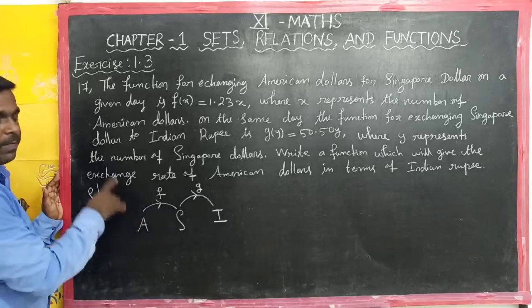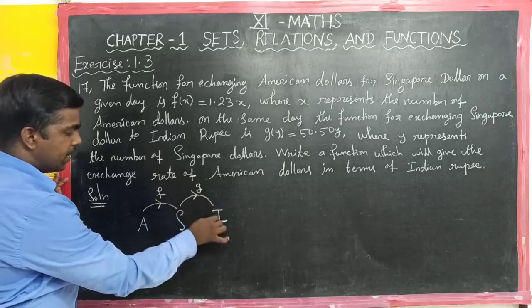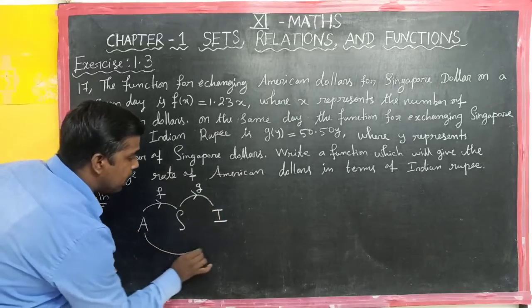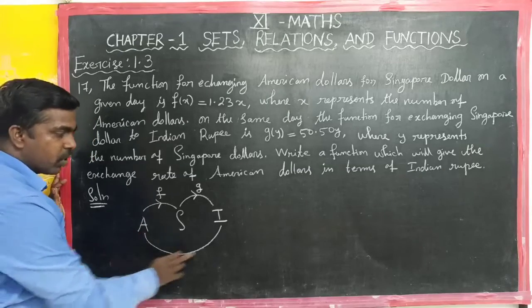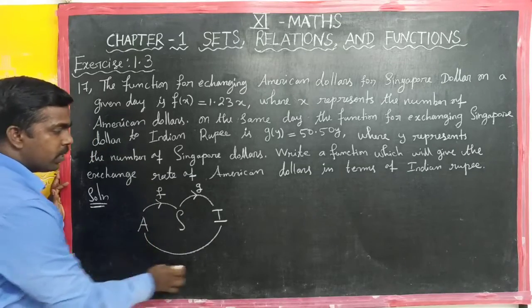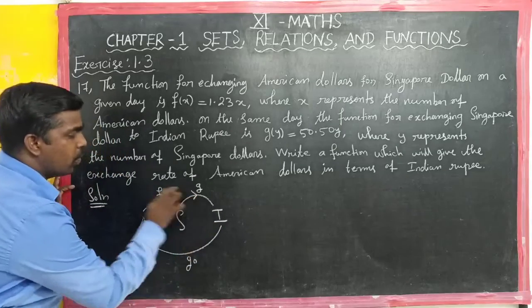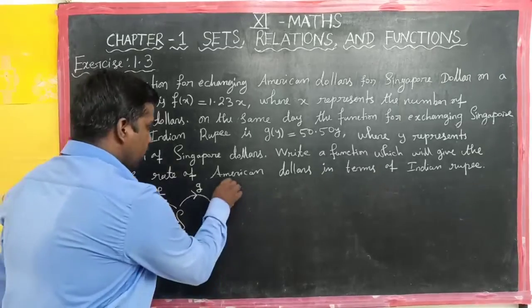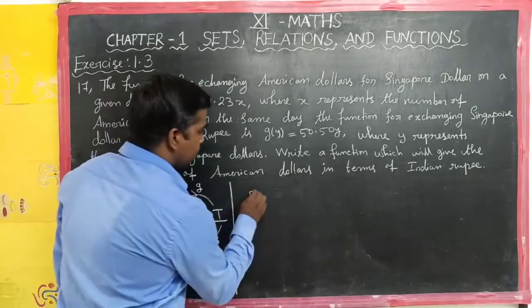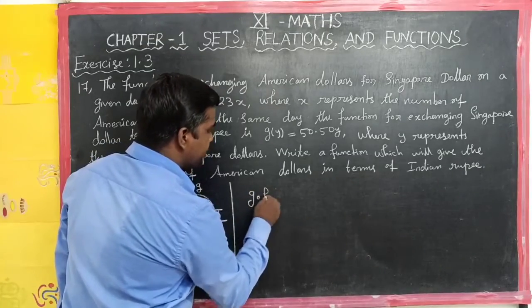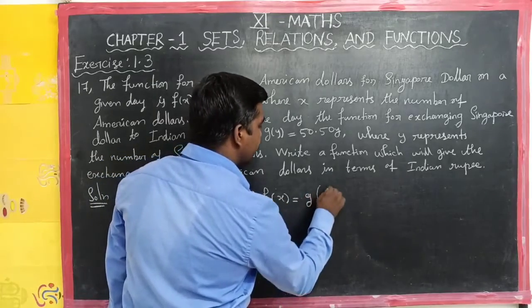American dollar into this corner, into this, the function is the composite function. So we use G composite F. We find G composite F of x.